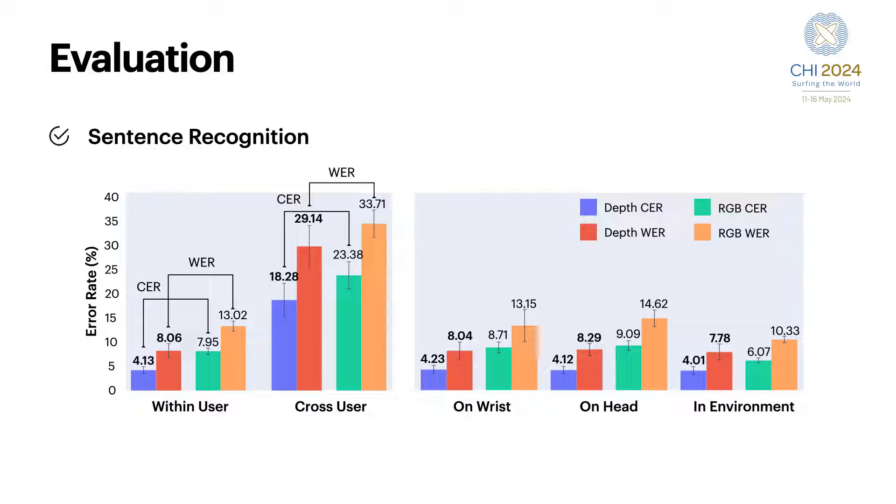To validate the feasibility of our approach, we conducted within-user and cross-user validations, comparing the results with a conventional RGB-based method as a baseline. In the within-user validation, our approach outperformed the conventional visual speech recognition method, achieving a character error rate of 4.13% and a word error rate of 8.06%, resulting in a relative improvement of 48.05% in CER and 38.1% in WER.